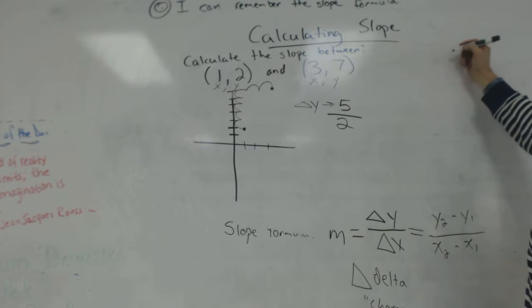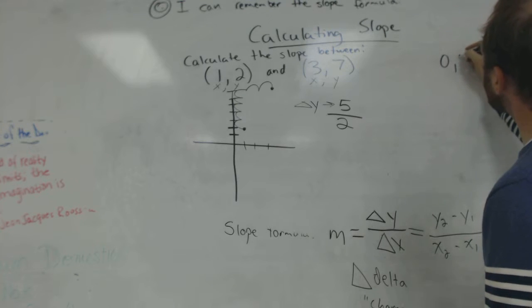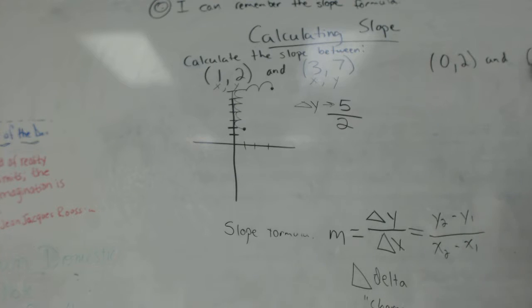Let's do another one. We're going to look for a pattern. Calculate the slope between 0, 2 and 3, 5. Let's plot them. 0, 2 is right here. 3, 5 is right here. Change in y, we go up 1, 2, 3. Change in x, we go over 1, 2, 3. Up 3, over 3. So our slope is 3 over 3. Any patterns here? Look just at the y's. So 2, 5, and somehow we got 3.